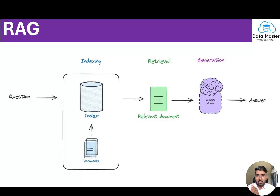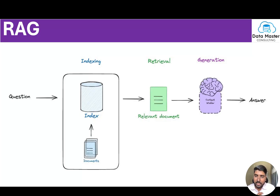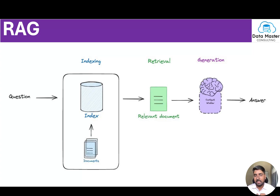When the user queries the LLM, the system retrieves relevant data from the vector database and augments it — feeds it into the LLM. The LLM then uses this relevant context to generate a response. This is how the RAG architecture is implemented.